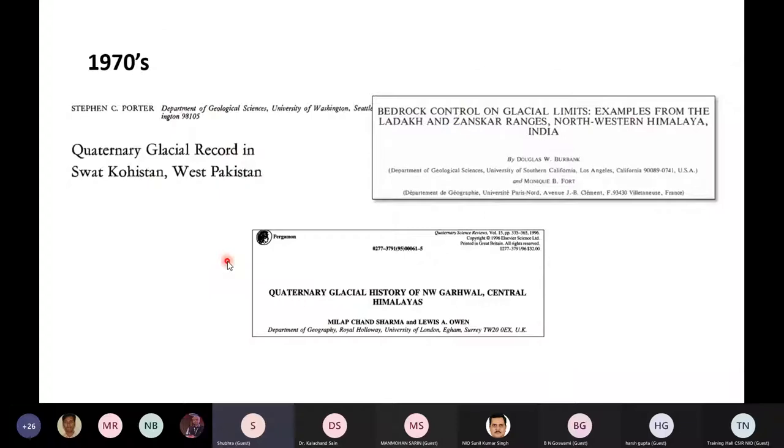Then for the context of Himalaya, in 1970s and 80s, extensive mapping started taking place for the quaternary glaciation. And with the first chronometric data that started coming in the 1990s, also the correlation with the paleoclimate and inferences about the response of the glaciers started coming up.